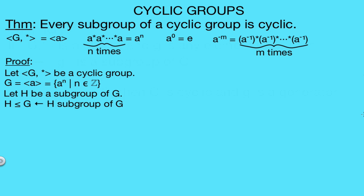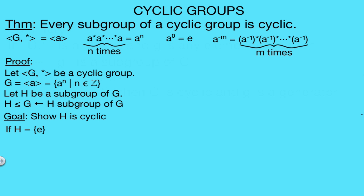Our goal is to show that H is cyclic. Let's first start with the trivial case, where our subgroup H is just the identity element. We know this is always a subgroup for any group. So if H is our trivial subgroup, then we know that the identity element is its own generator, and so H is cyclic.